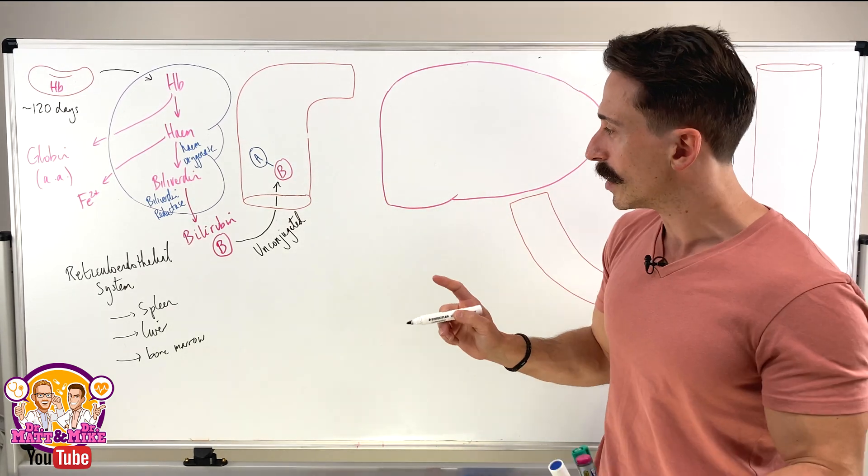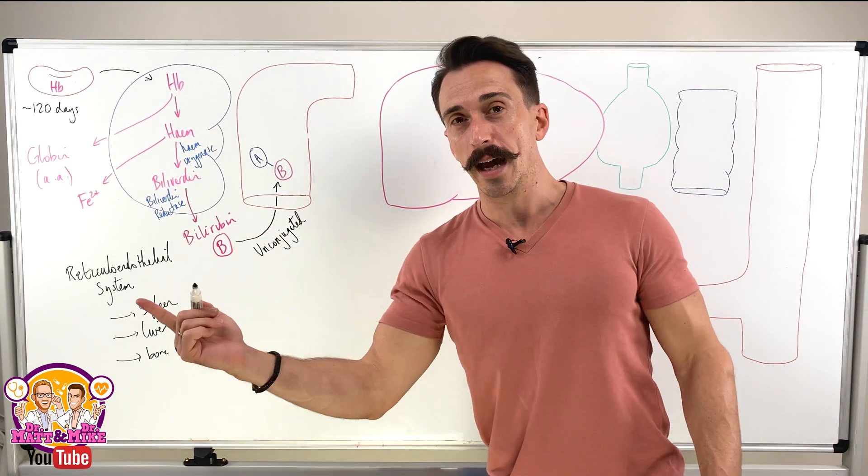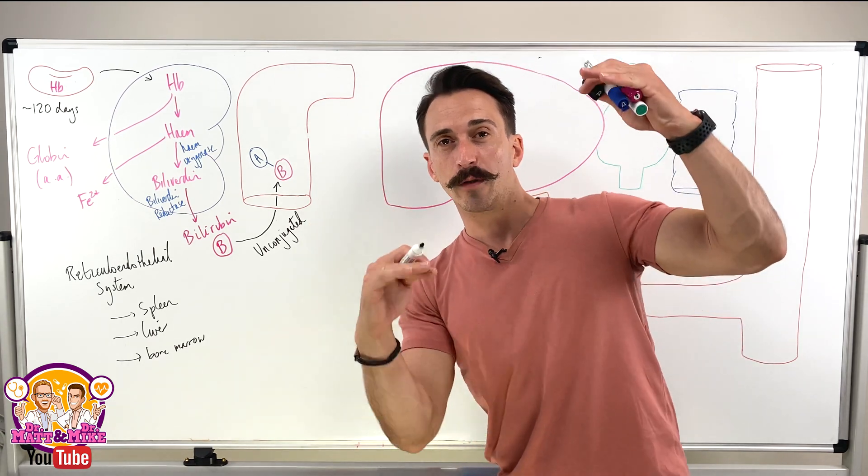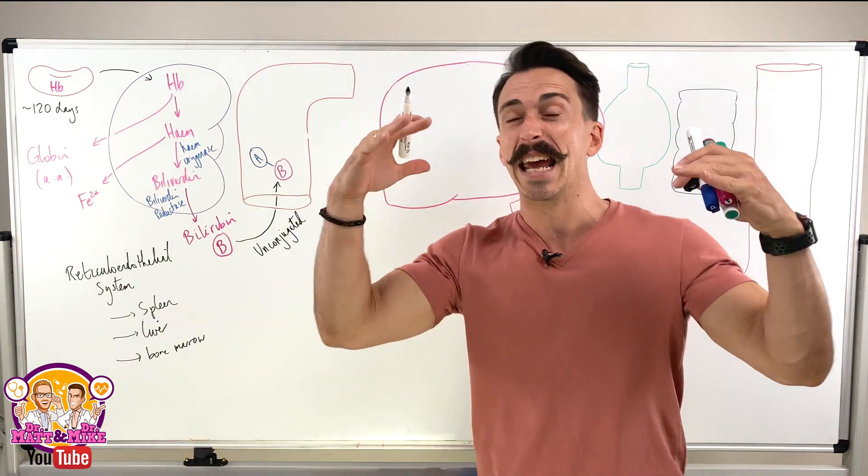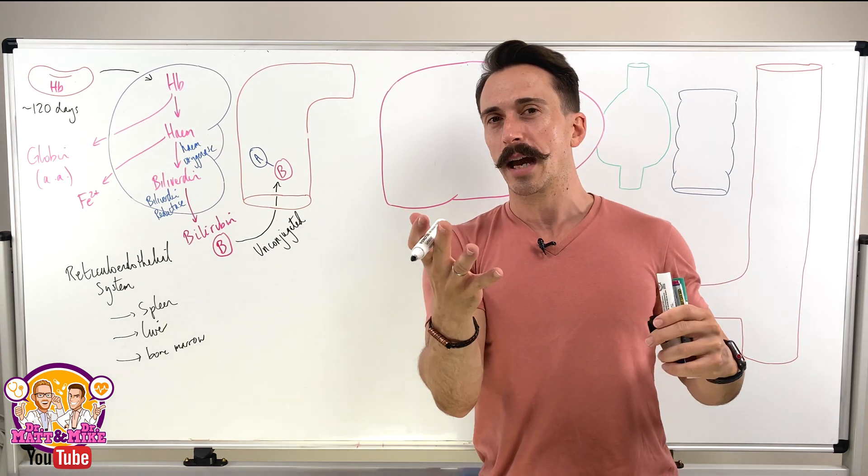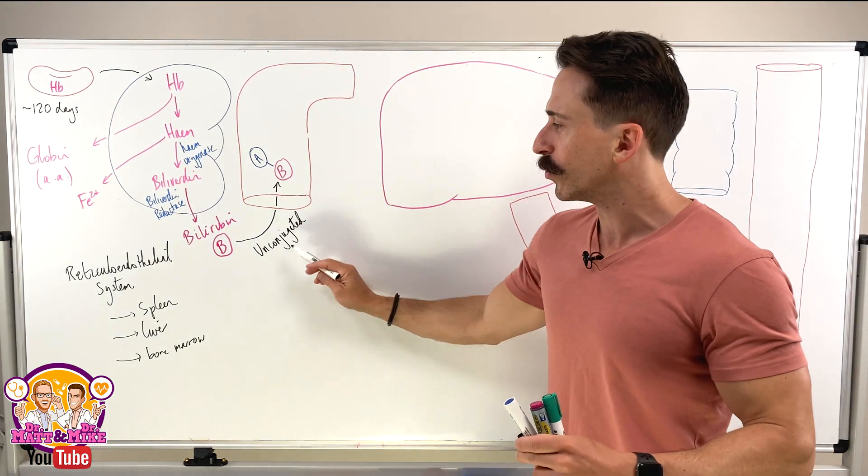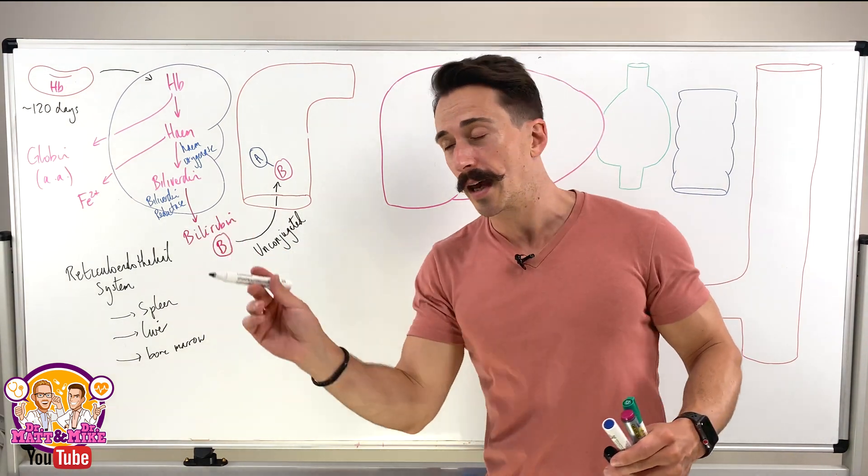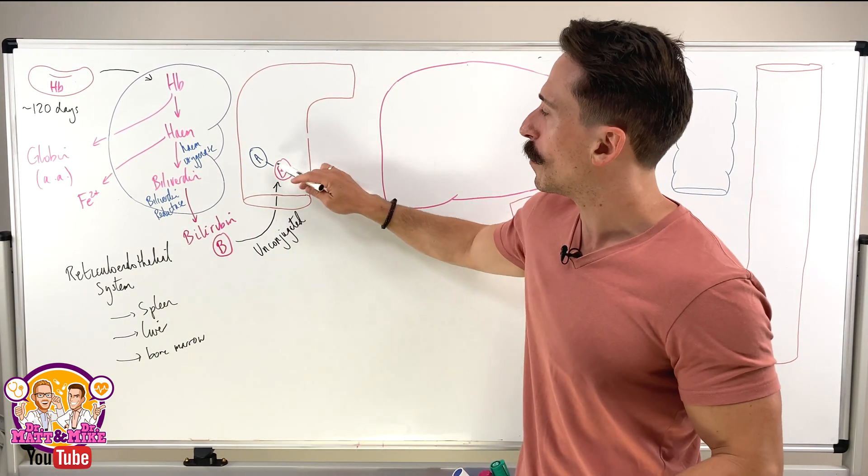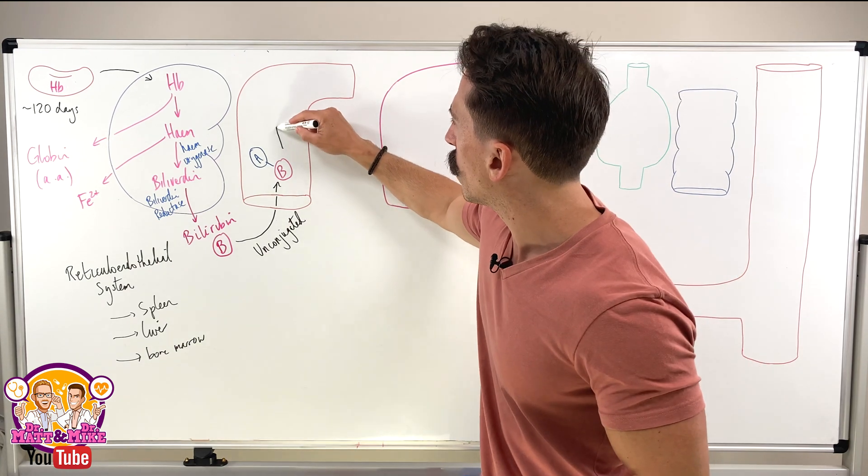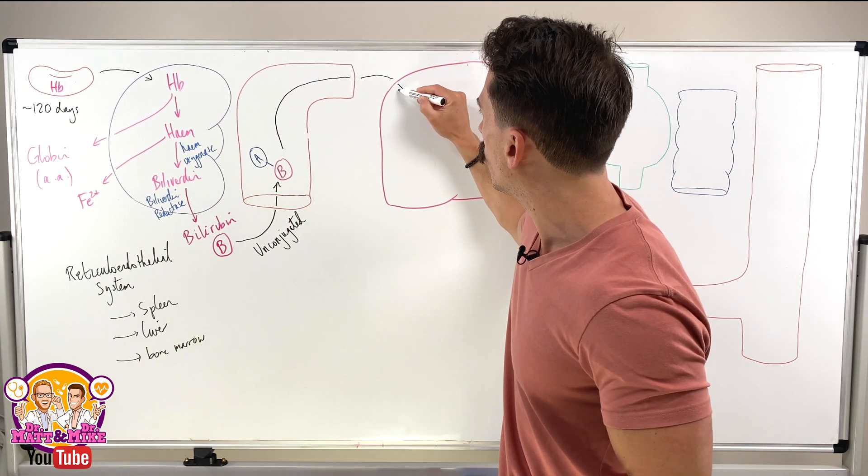Really important because you can obviously have conjugated and varying levels of conjugated versus unconjugated bilirubin in the blood. If they go too high, it can give you an indication as to what is the cause of the jaundice, the yellowing due to the high levels of bilirubin. We'll get there. So now we've got bilirubin bound to albumin. It goes through the bloodstream and at some point it's going to get into the liver.